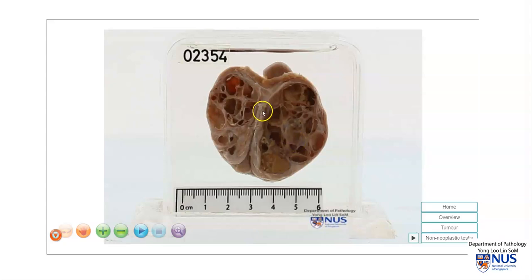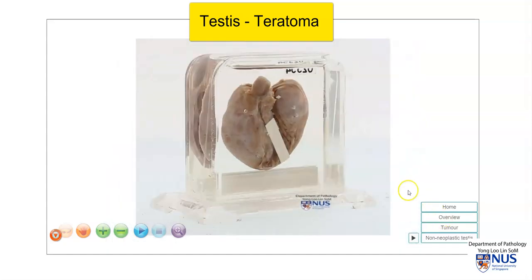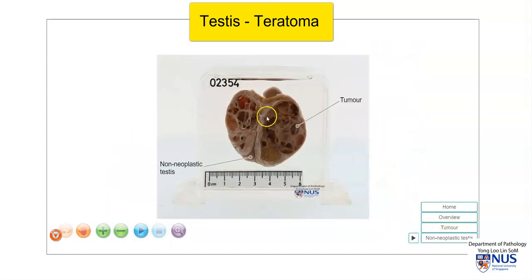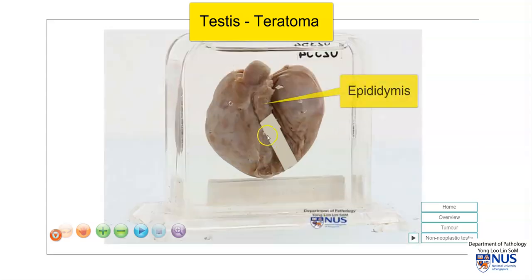Hello, this is a virtual pathology specimen of a teratoma of the testis. Let's quickly orientate ourselves here. This is the tumor, which is relatively well-circumscribed, and the testis has been bivalved — opened — revealing one half here and another half here. This is the non-neoplastic testis. Turning this around, we can see the epididymis here.